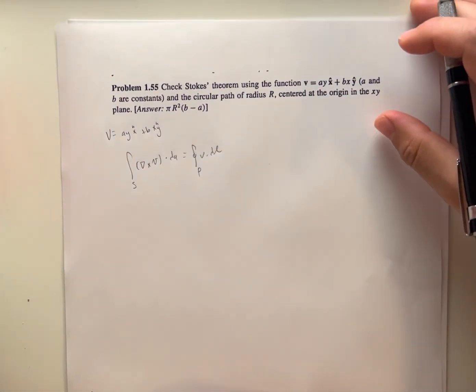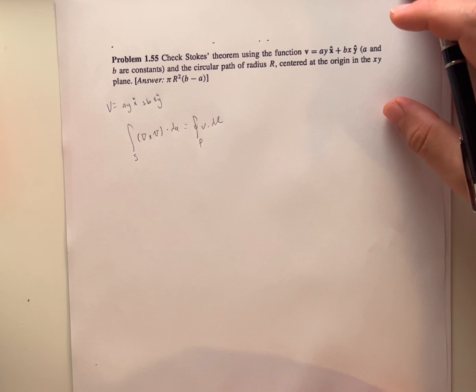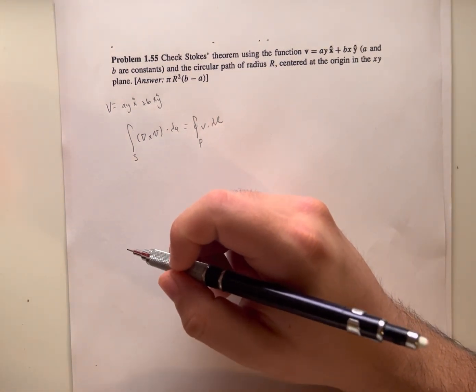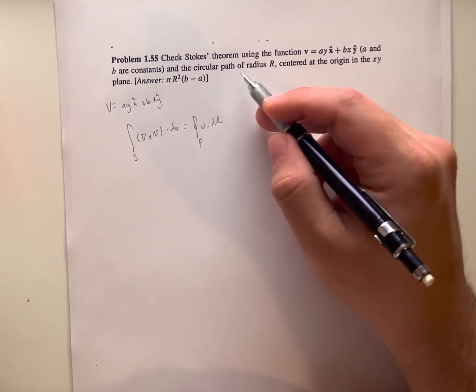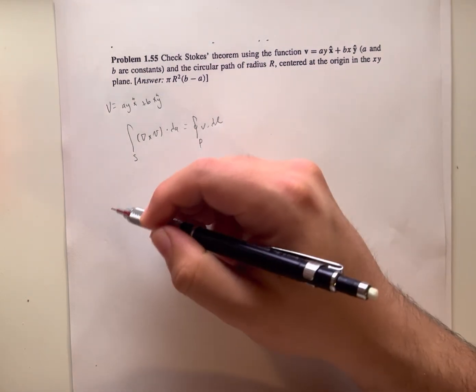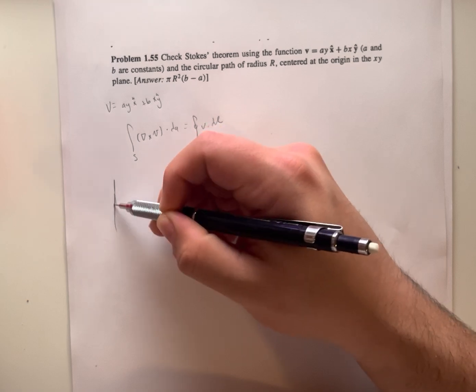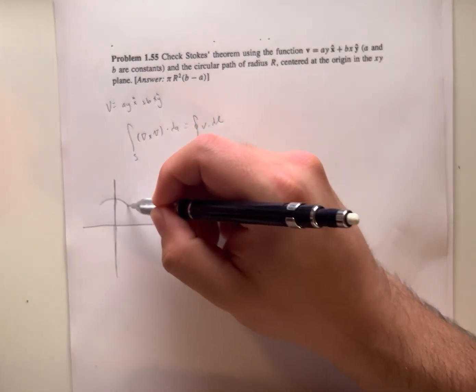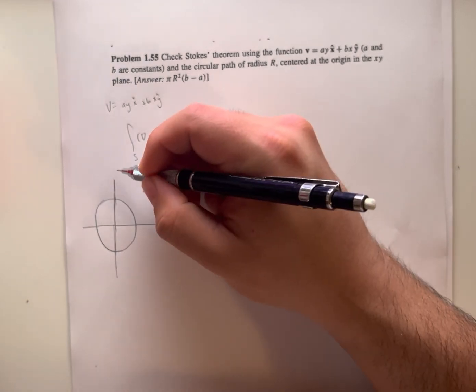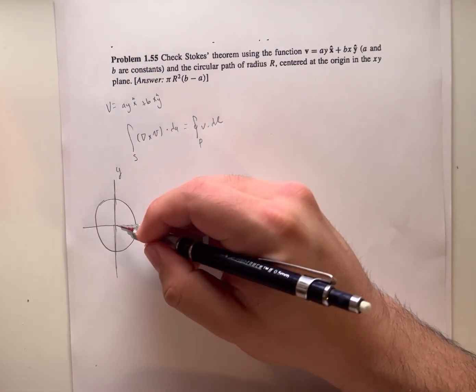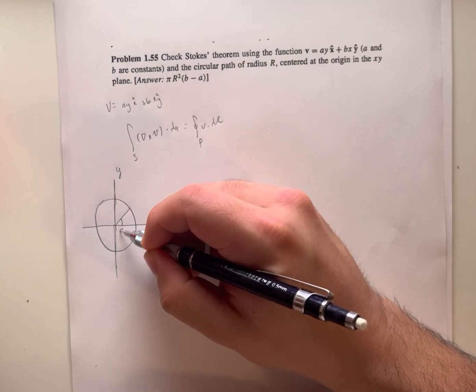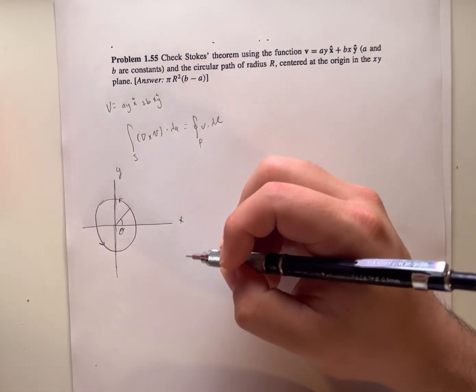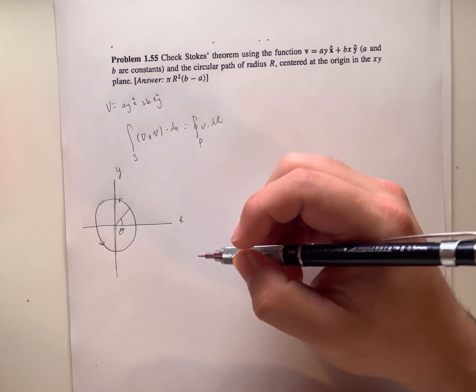Doing the line integral first, we take the vector field dotted with a tiny piece of the path of the loop. And since it's circular, given by this path of radius R centered at the origin in the x-y plane, we can parametrize the path using the angle it makes.